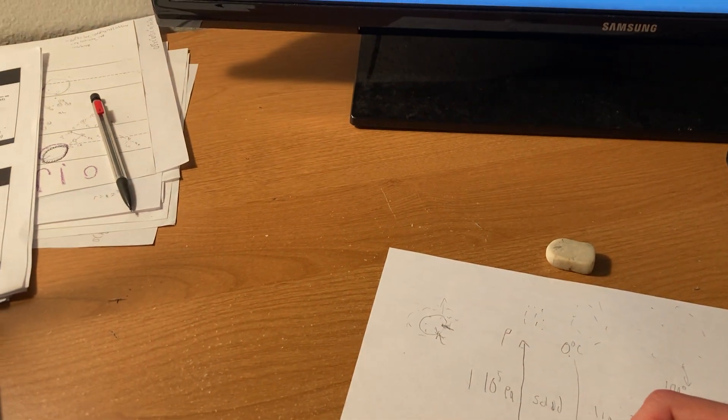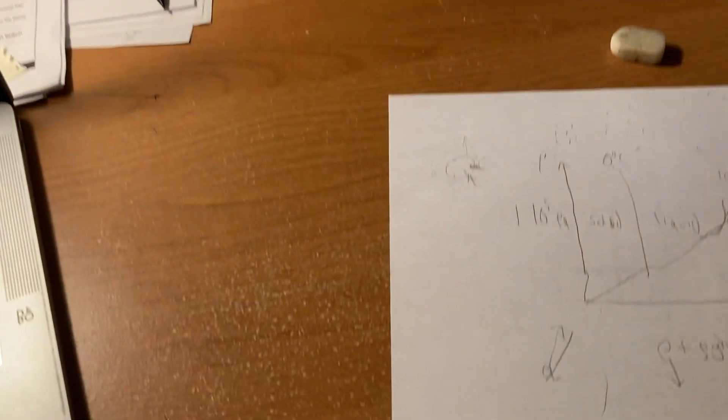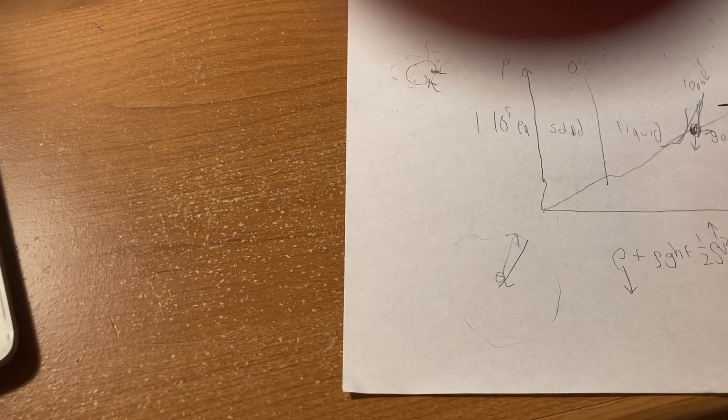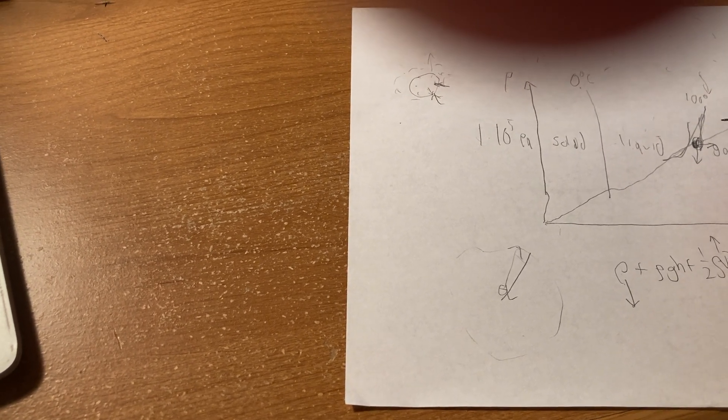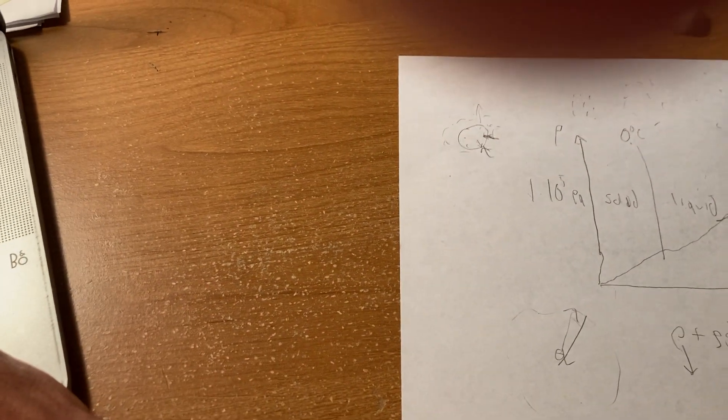The Rayleigh-Plesset equation models the radius of the bubble over time. In this model, the bubble is assumed to be perfectly spherical, with gas of uniform pressure on the inside and infinite, incompressible fluid on the outside.